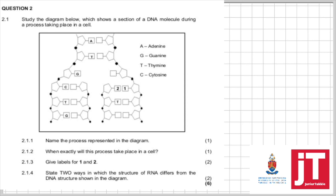Study the diagram which shows a section of a DNA molecule during a process taking place in a cell. Name the process represented. If you look carefully, you can see there is only thymine — so this can only be DNA replication. When does this take place? At interphase. What is the label for base 1? If this is cytosine, the complementary base will obviously be guanine. So if this is cytosine, this is guanine, and this will be cytosine again.